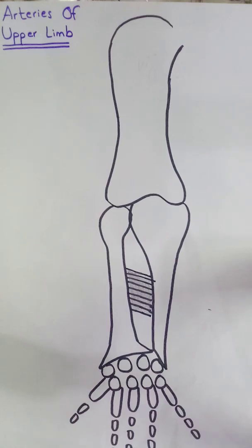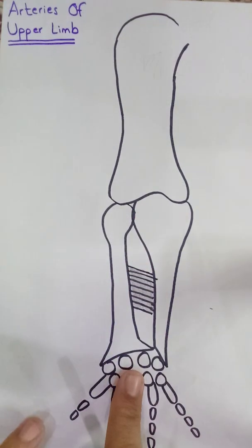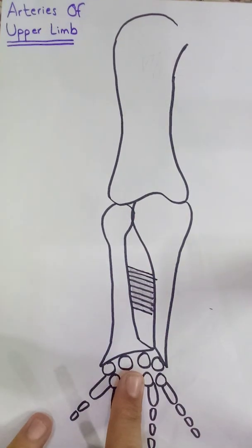Assalamu alaikum. Today we will discuss the arteries of the upper limb along with the anastomosis around the elbow joint and the wrist joint.